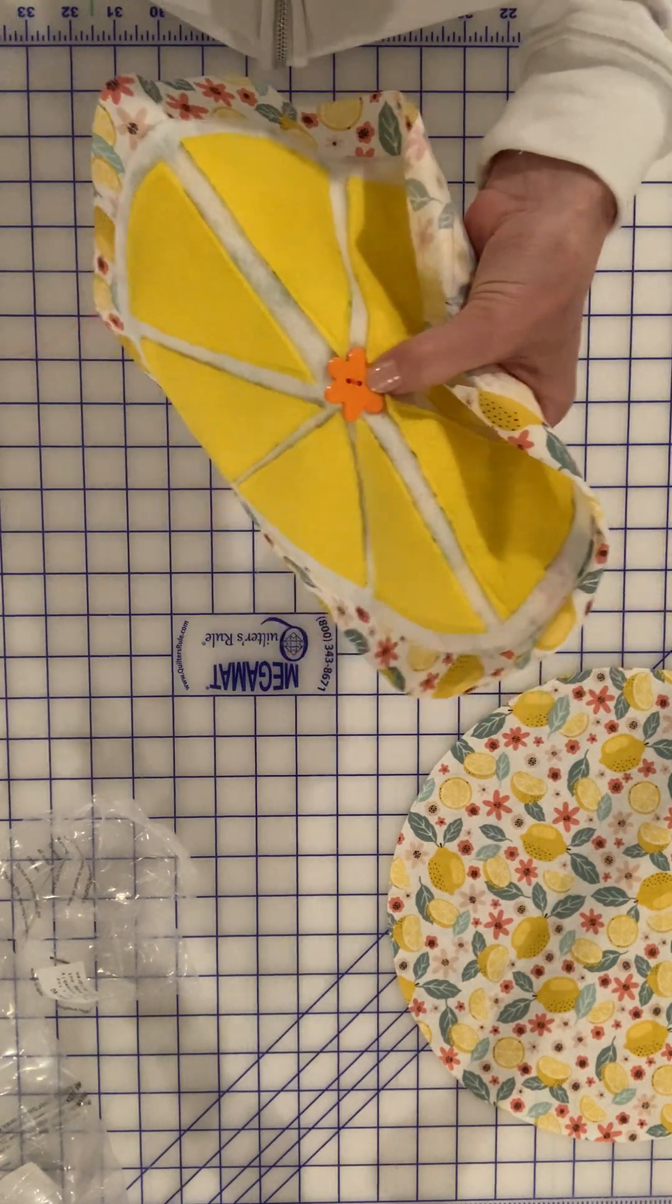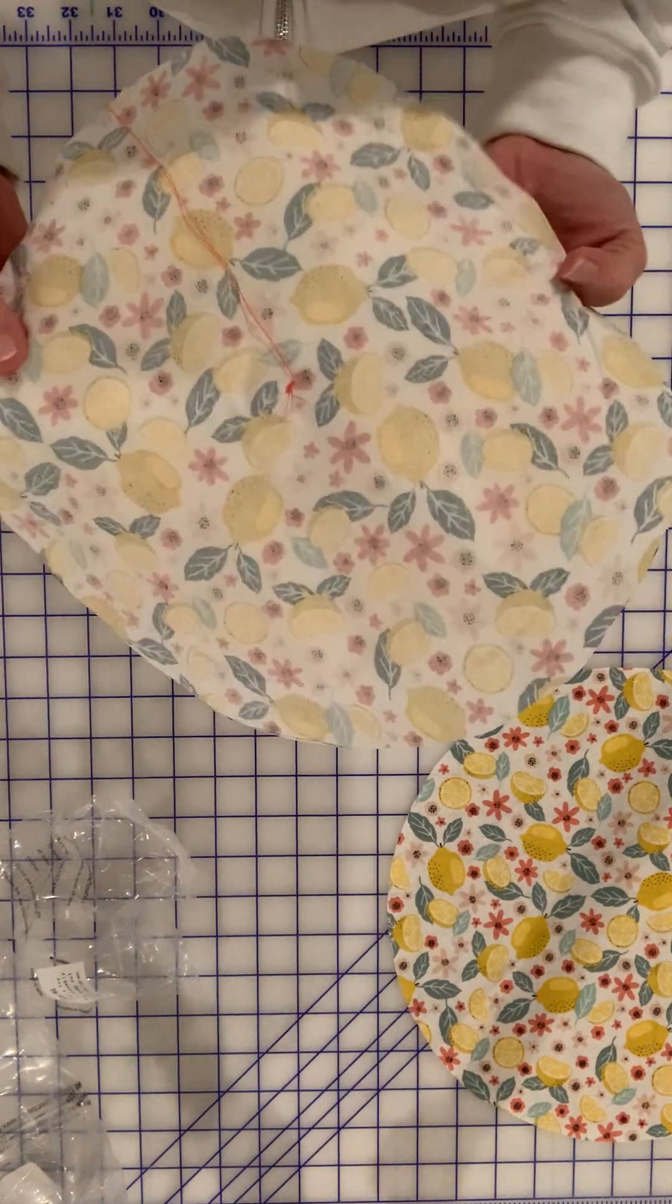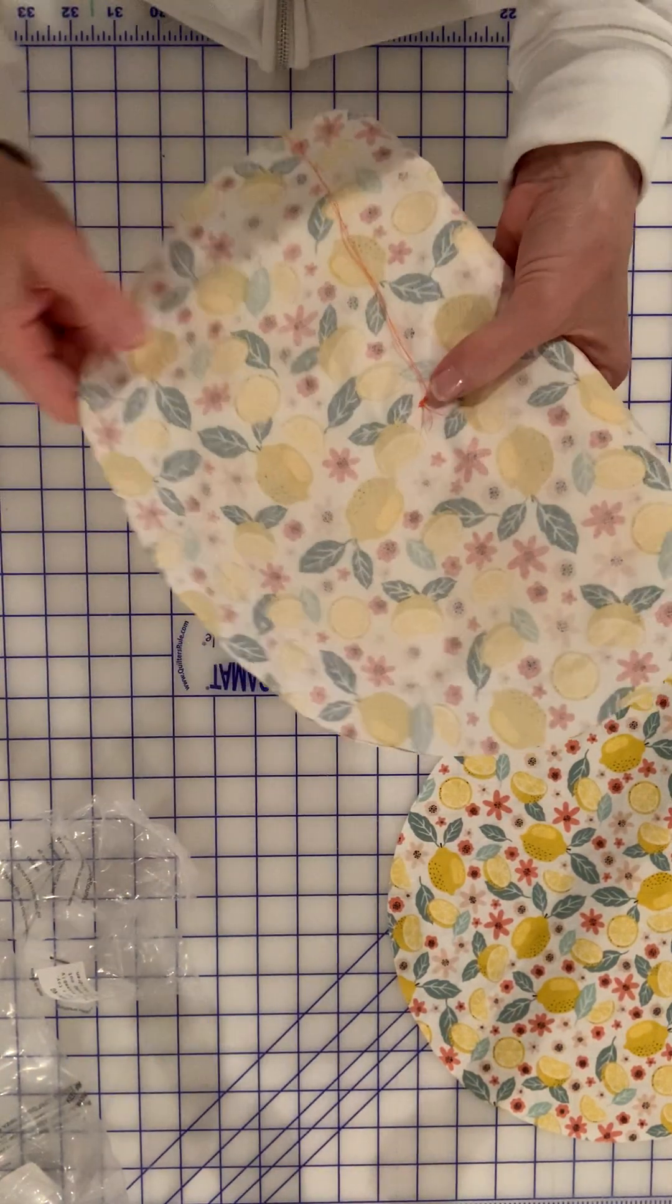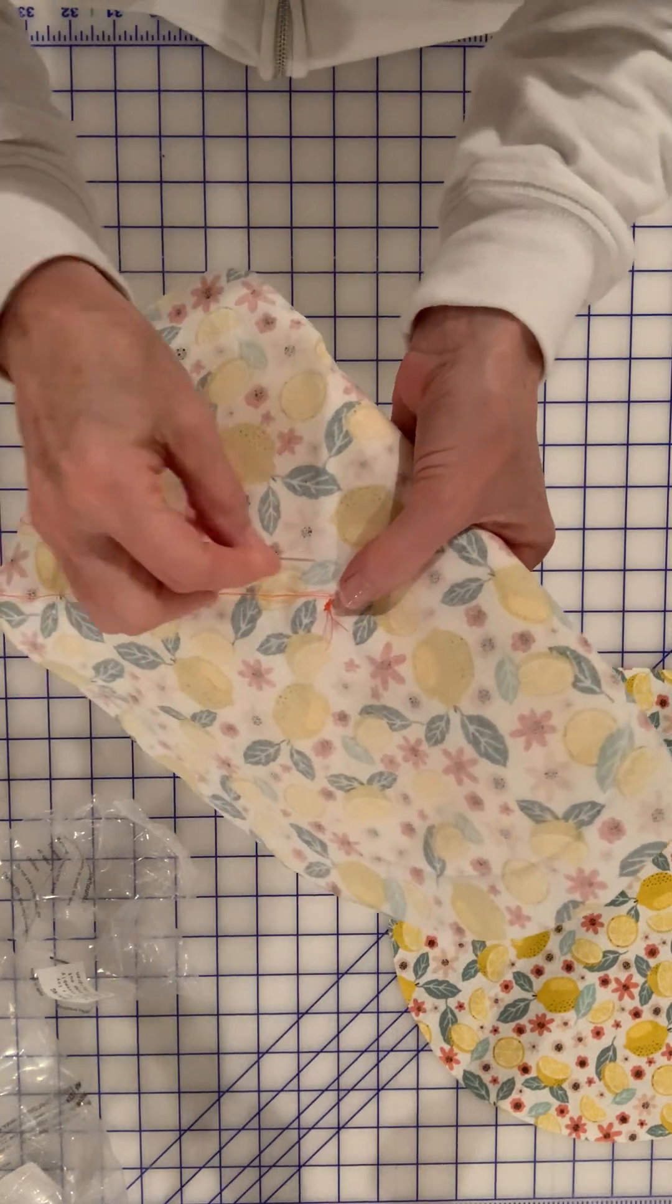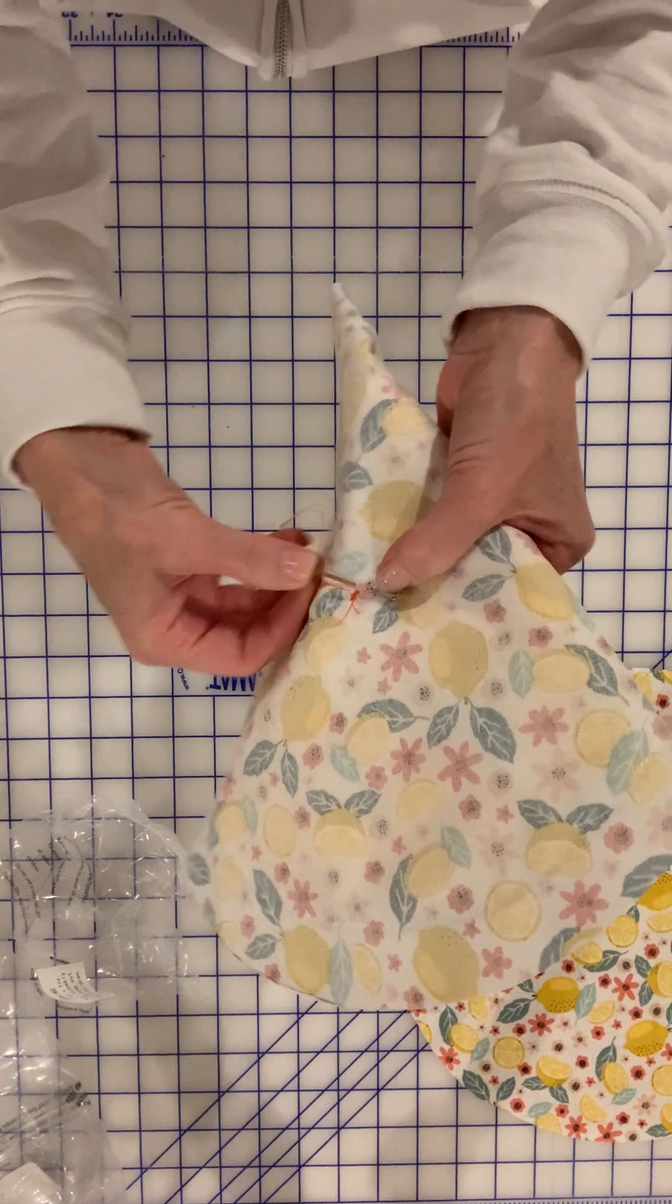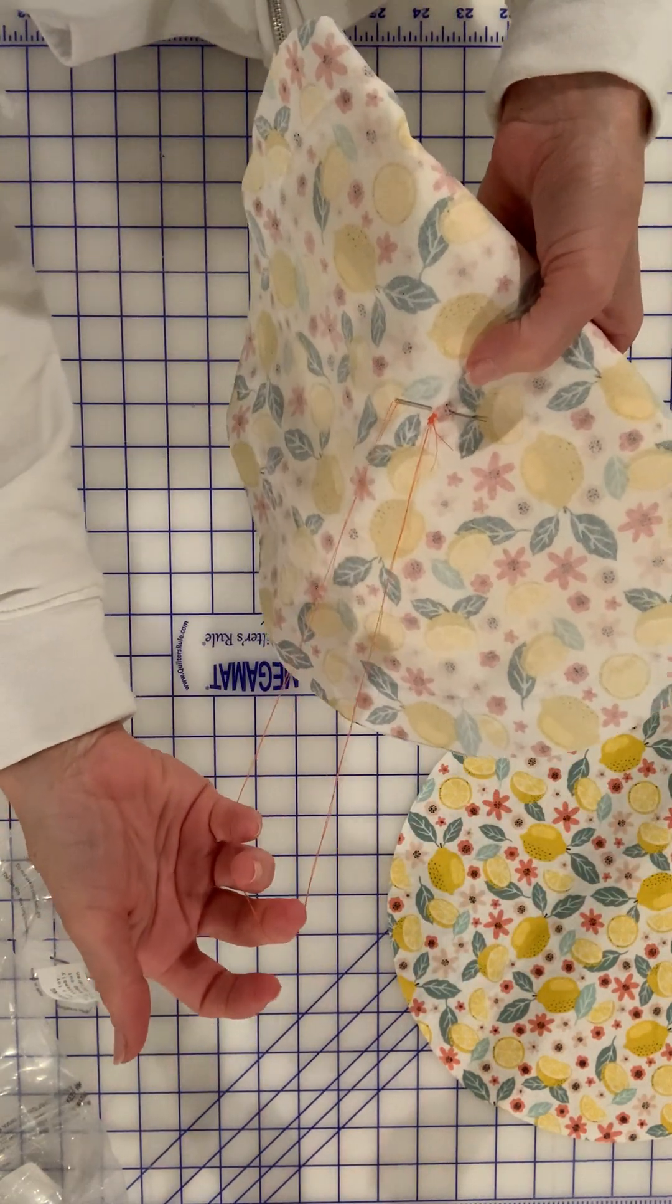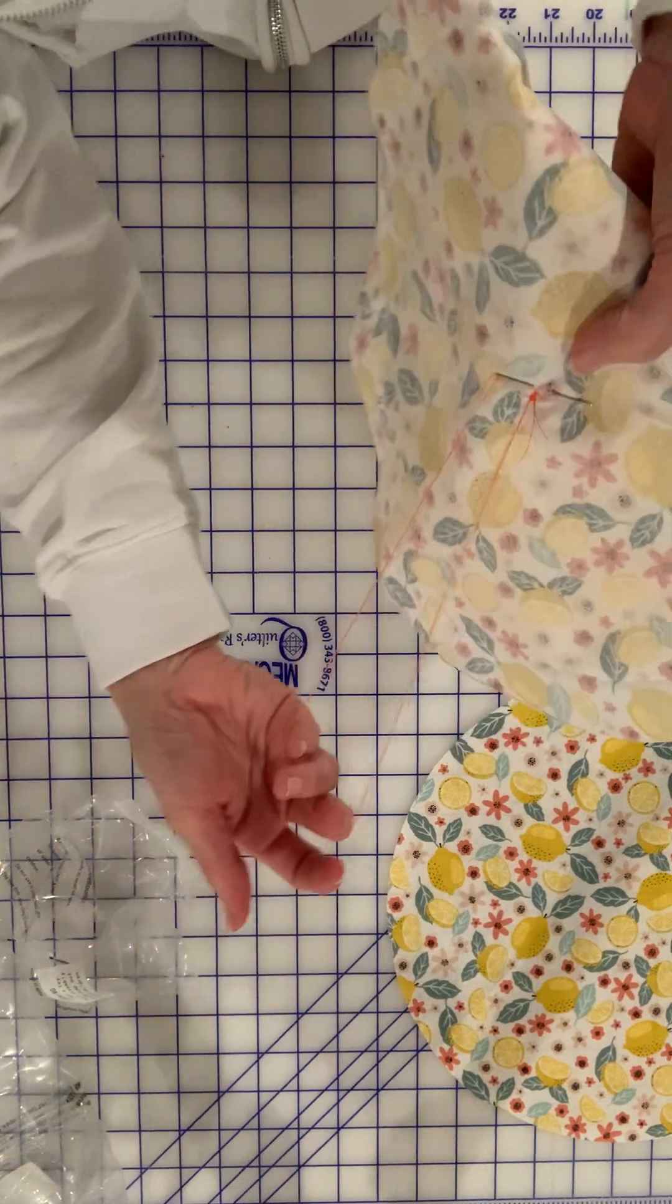So now I need to do a tie-off knot on this side. I'm going to fold this in so I can grip it. The best way to do a tie-off knot is you're going to take a little tiny stitch but not pull the needle all the way through, and your thread is in the shape of a U kind of hanging underneath your needle.